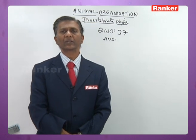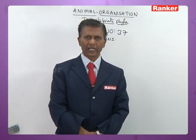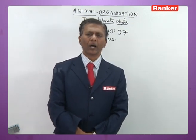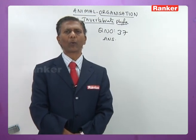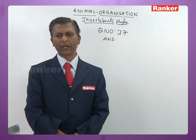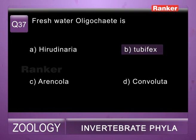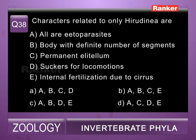Thirty-seventh question: freshwater oligochaetes — a) Hirudinaria (Indian cattle leech — Hirudinaria), b) Tubifex (commonly called blood worm, freshwater oligochaete), c) Arenicola (lugworm/lobworm, belongs to Polychaeta), d) Convoluta (a turbellarian). So among these the correct answer is b) Tubifex, which is a freshwater oligochaete commonly called blood worm.